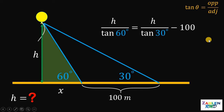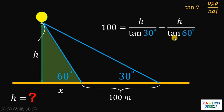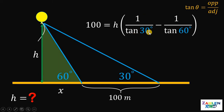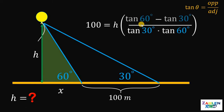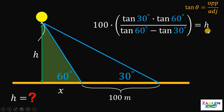We are now ready to solve for h. Rearranging terms, notice on the right-hand side we have a common factor of h, so we can factor it out. Combining 1/tan(30°) − 1/tan(60°) gives us [tan(60°) − tan(30°)] / [tan(30°) × tan(60°)]. To isolate h, we multiply both sides by the reciprocal: tan(30°) × tan(60°) / [tan(60°) − tan(30°)]. Therefore, h = 100 × tan(30°) × tan(60°) / [tan(60°) − tan(30°)].